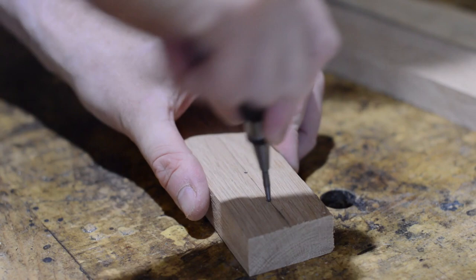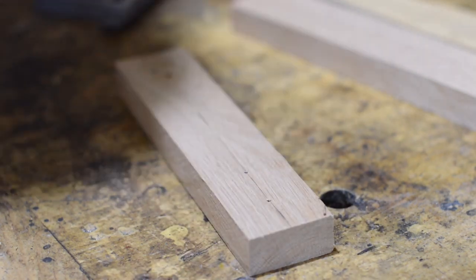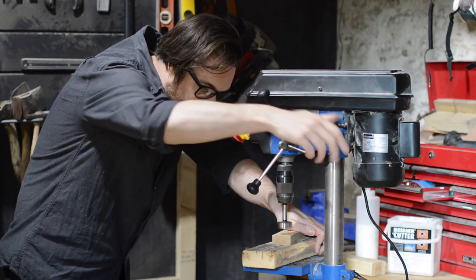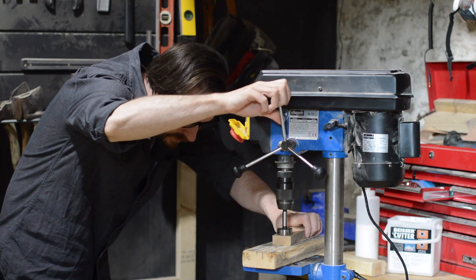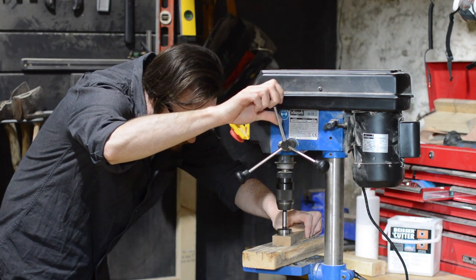As I'm not particularly imaginative, I've gone for a beer bottle opener. I'm making it out of some oak that I had left over from some wine tables. Yes, I know, I make a lot of booze related things.